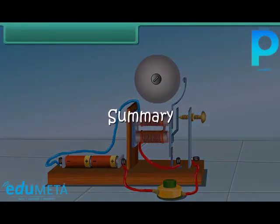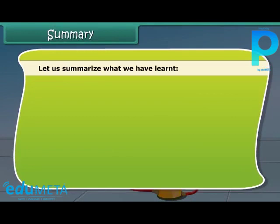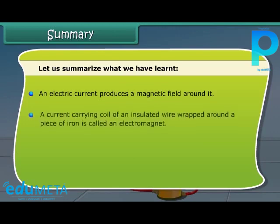Let us summarize what we have learned. An electric current produces a magnetic field around it. A current-carrying coil of insulated wire wrapped around a piece of iron is called an electromagnet. Electric bell functions on the principle of an electromagnet.